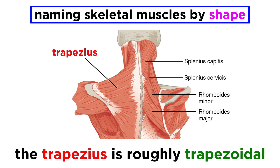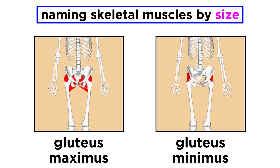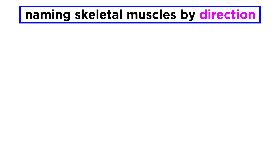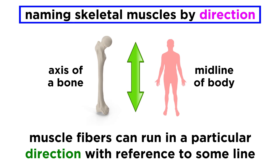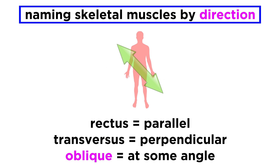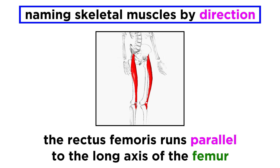Next there is muscle shape — the trapezius muscles are roughly trapezoidal in shape. Then muscle size: we will see words like maximus, minimus, longus, and brevis in a number of muscles, meaning large, small, long, or short respectively. Examples include the gluteus maximus and gluteus minimus. Next, the direction of muscle fibers — sometimes these run in a particular direction with reference to the midline of the body or the axis of a bone. Rectus means parallel, transversus means perpendicular, and oblique means at some angle. So the rectus femoris is a muscle whose fibers run parallel to the long axis of the femur.